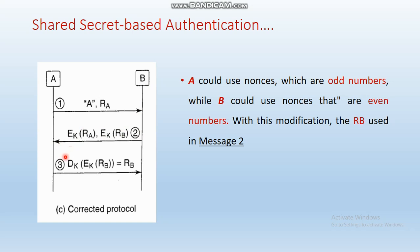In the third step, party A decrypts the encrypted RB value. When the ciphertext is decrypted, A receives the original RB and sends it back to party B. Party B receives back exactly what it sent, so mutual authentication happens properly and no attacker can compromise this corrected protocol.